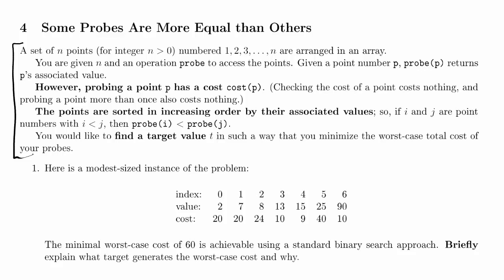However, probing a point p has a cost, cost of p. So we've got a bunch of points arranged in an array. We can just think of them as arranged on a line. If we probe one of these points, it's going to give us some value that's sort of hidden inside that point. But doing that probe has a cost, and probing different points might have different costs.